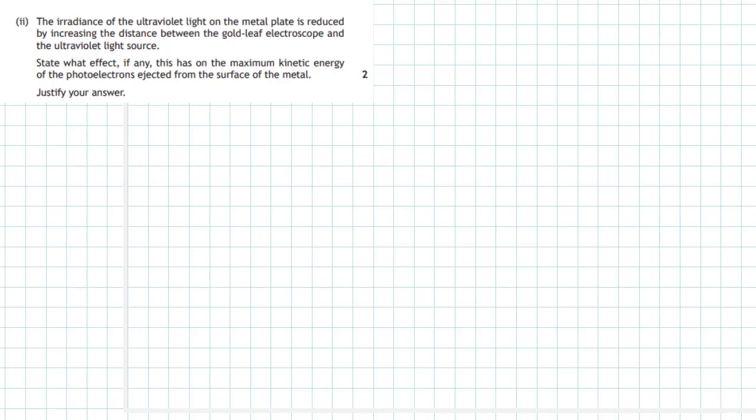Question 2. The irradiance of the ultraviolet light on the metal plate is reduced by increasing the distance between the gold leaf electroscope and the ultraviolet light source. State what effect, if any, this has on the maximum kinetic energy of the photoelectrons ejected from the surface of the metal. You must justify your answer.